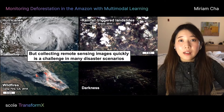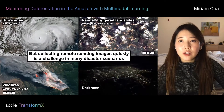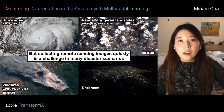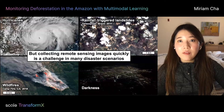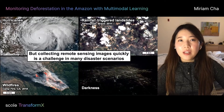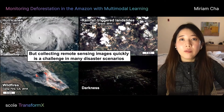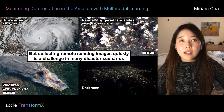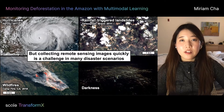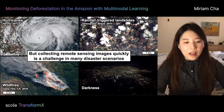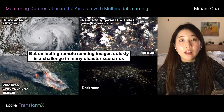However, collecting remote sensing images can become a challenge in many disaster scenarios. On the top right is a landslide triggered by rainfall in Teresópolis, Brazil. As Brazil is often humid and has heavy cloud coverage almost year-round, the view of the optical sensor gets blocked by clouds. In other disaster scenarios such as Hurricane Harvey and wildfires in California, ashes, clouds, smoke, and lack of light source can make data collection difficult.